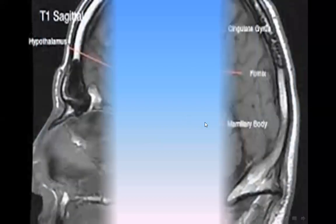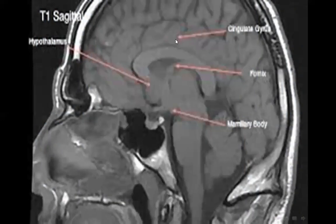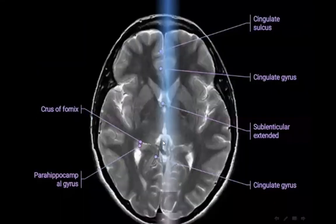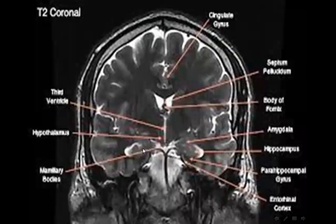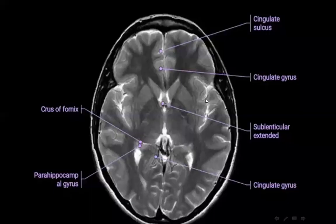This is the mammillary body, this is the cingulate gyrus, and this is the hypothalamus. This is a T1 sagittal MRI and this is a T2 MRI, showing the cingulate gyrus and the cingulate sulcus.